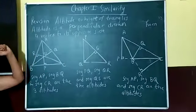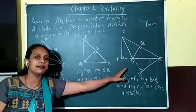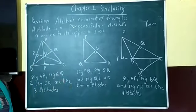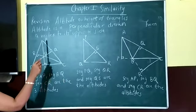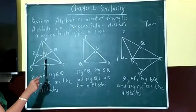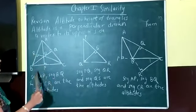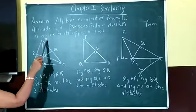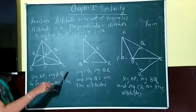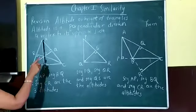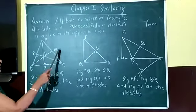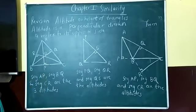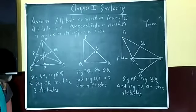This is the definition of altitude and now we have constructed three triangles. If you see the first one, it is an acute angle triangle. Triangle ABC is an acute angle triangle and if you see from the vertex, I have drawn a perpendicular to the opposite base. BC is the side opposite to vertex A, AC is the side opposite to B, and AB is the side opposite to vertex C. The three altitudes are AP, BQ, and CR, and the point of intersection is O. This point of intersection of altitudes is called the orthocentre.